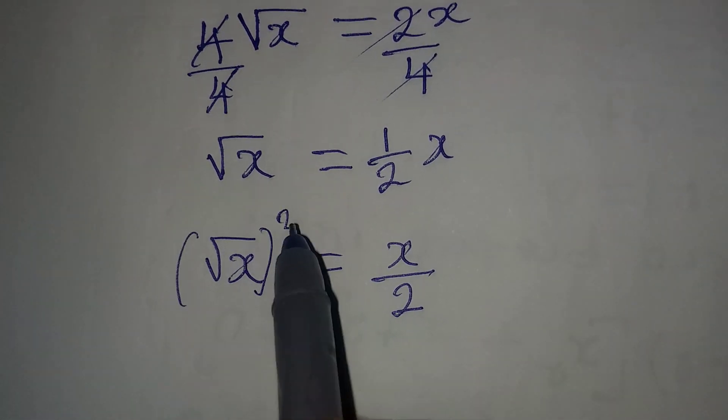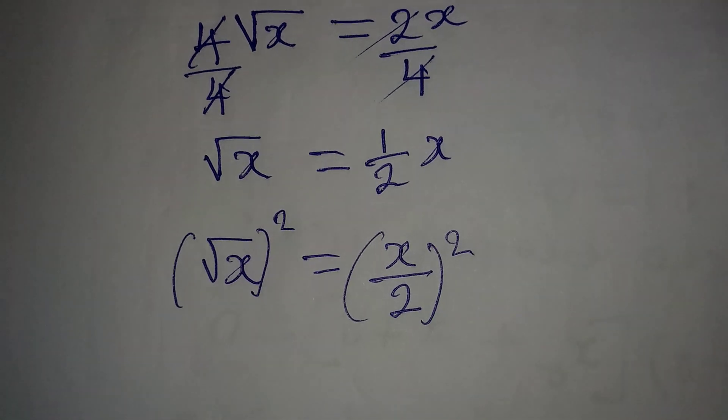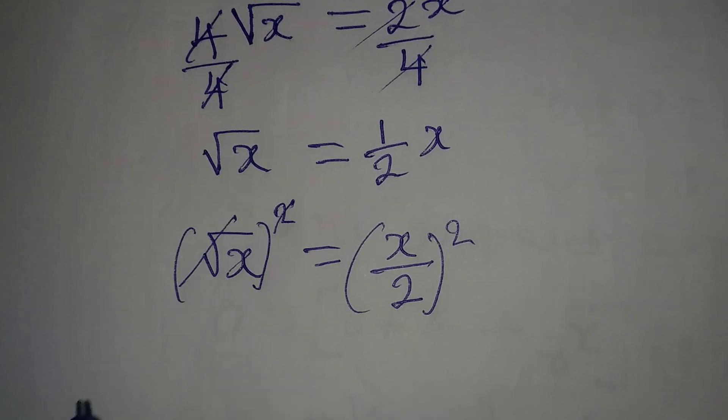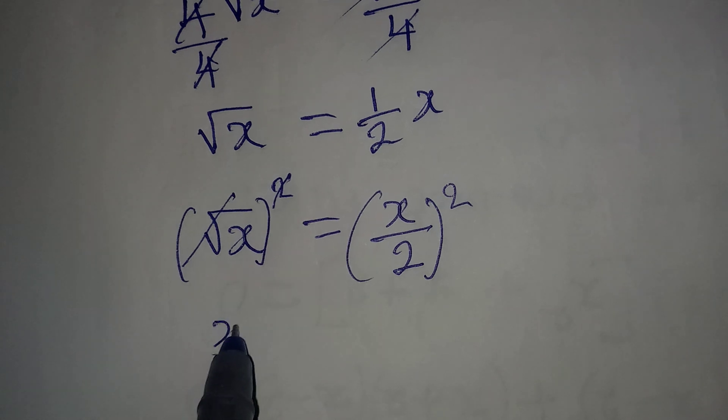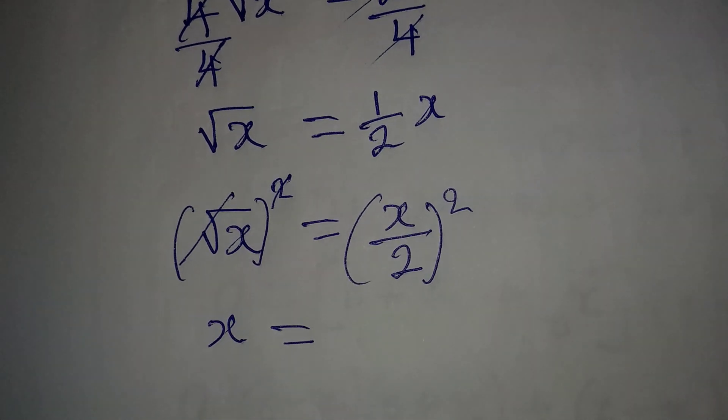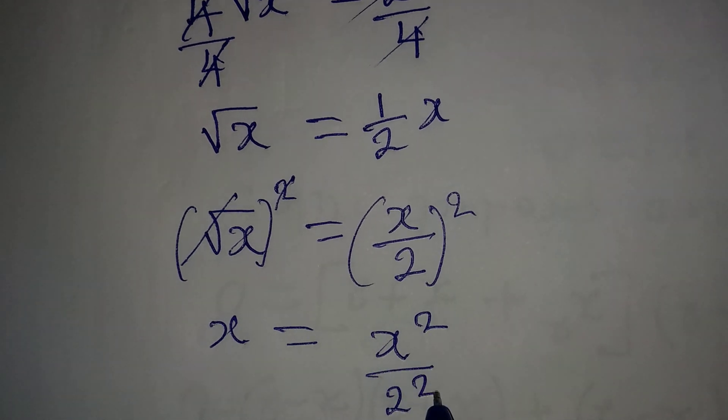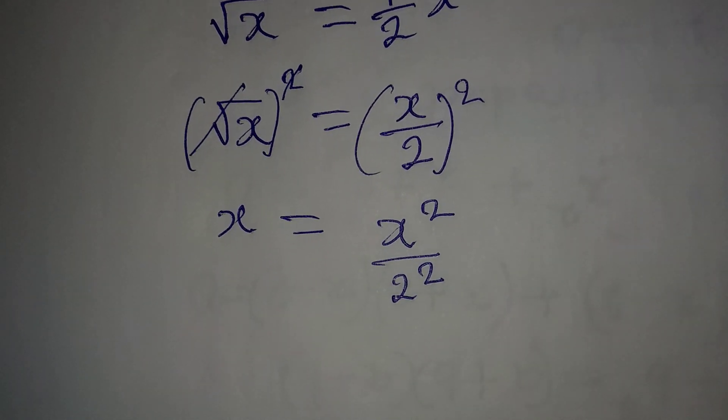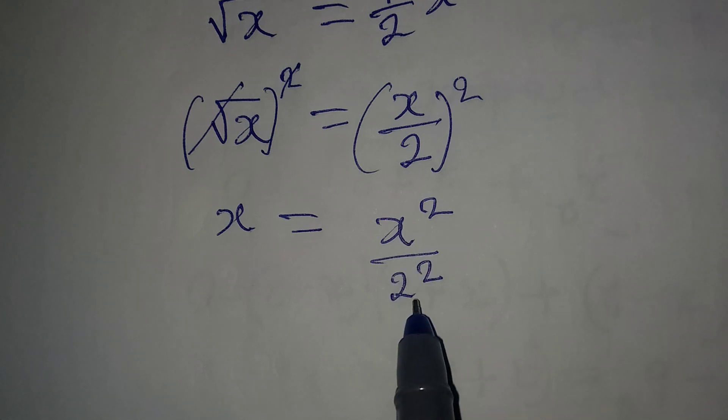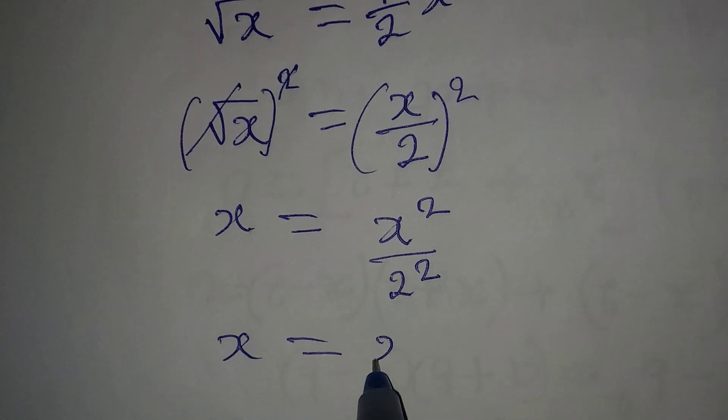Then this will be squared and this will go. Now our x = x²/2² because the square here is for both the numerator and denominator. x = x²/4.